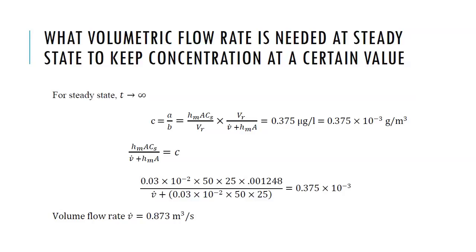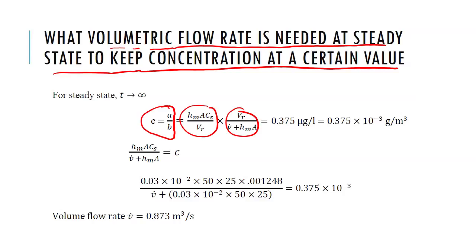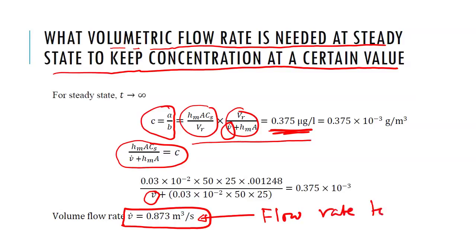So in this one, it's a little bit of a design problem. We already know that at steady state the concentration is given by C equal to A over B, where A and B are those terms. But what volumetric flow rate is needed at steady state to keep concentration at a certain value? So the concentration itself is given. We need to find what should be the volumetric flow rate. So if we equate these two here and then plug in everything other than V dot, we get V dot. So this is a flow rate to keep chloroform below certain value, below desired value.